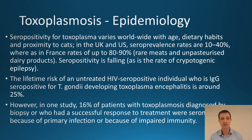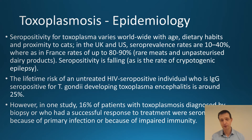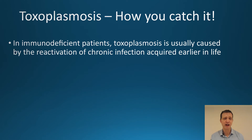The lifetime risk of an untreated HIV-positive individual who is IgG positive for Toxo developing Toxoplasmosis encephalitis is around 25 percent. However, in one study, 60 percent of patients with Toxoplasmosis diagnosed on biopsy were actually seronegative — probably because it was a primary infection or more likely they had impaired antibody responses.